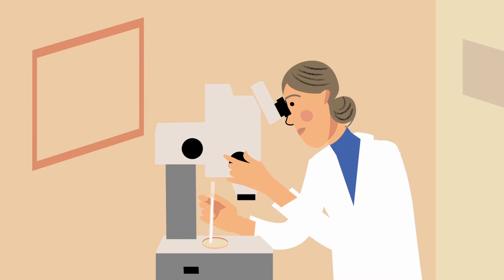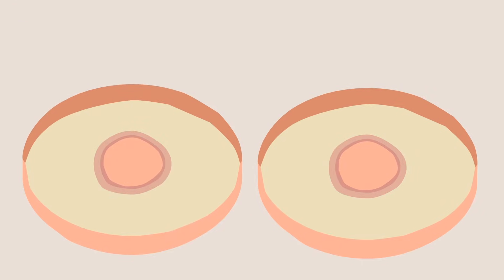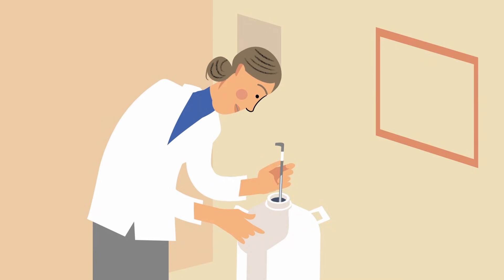Three days later, they fertilized the eggs with sperm from a northern white rhino male. After another week, two of the eggs made it to the stage of development when the embryo can be frozen and preserved for the future.